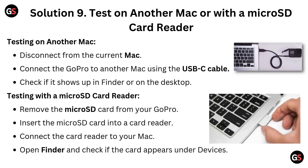Solution 9: Test on another Mac or with a microSD card reader. To test on another Mac, disconnect from the current Mac and connect the GoPro to another Mac using the USB-C cable, then check if it shows up in Finder or on the desktop. To test with a microSD card reader, remove the microSD card from your GoPro, insert it into a card reader, connect the card reader to your Mac, open Finder and check if the card appears under Devices.